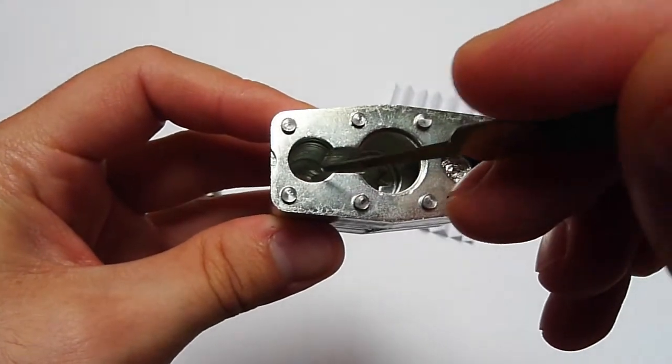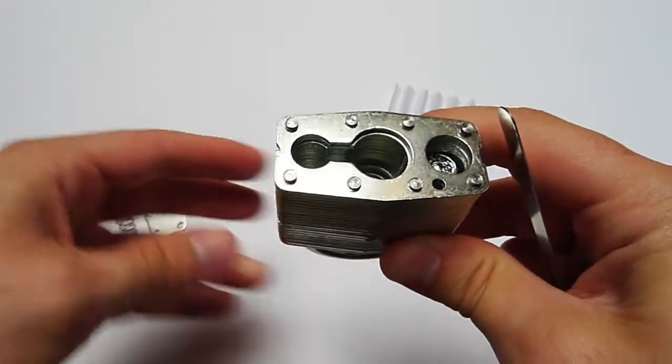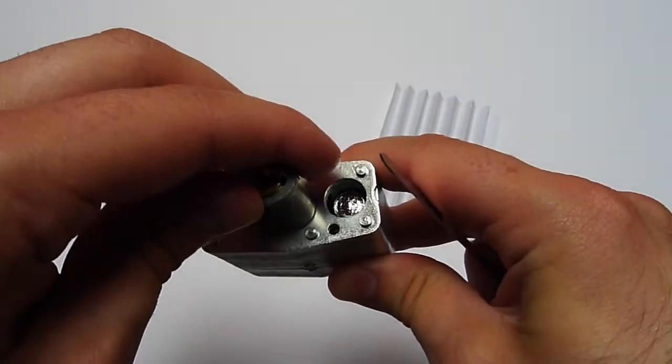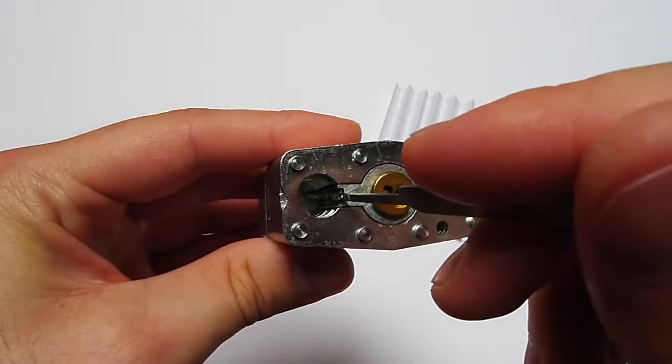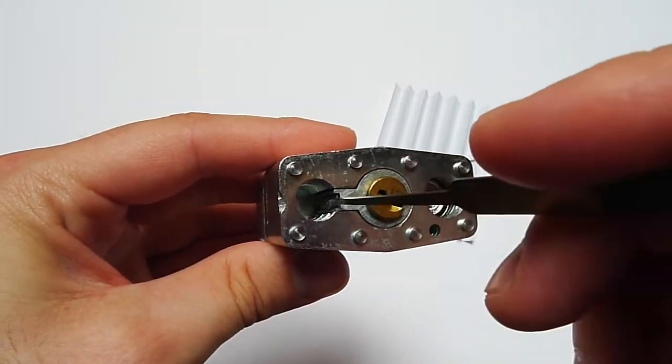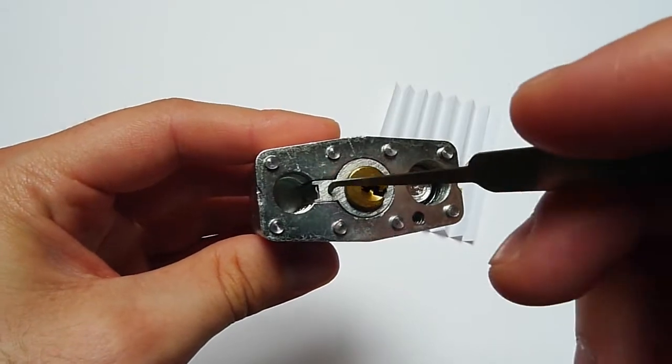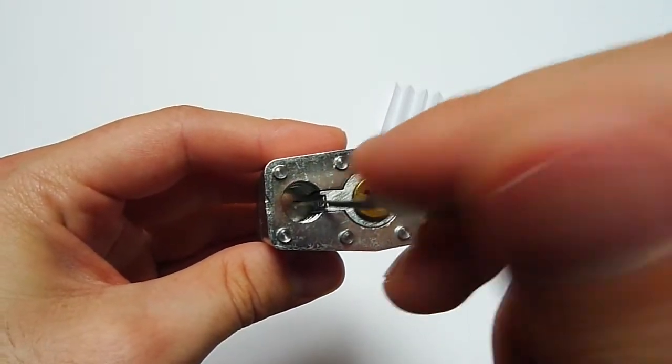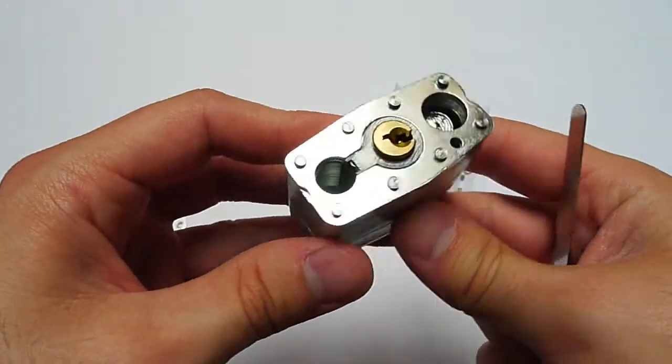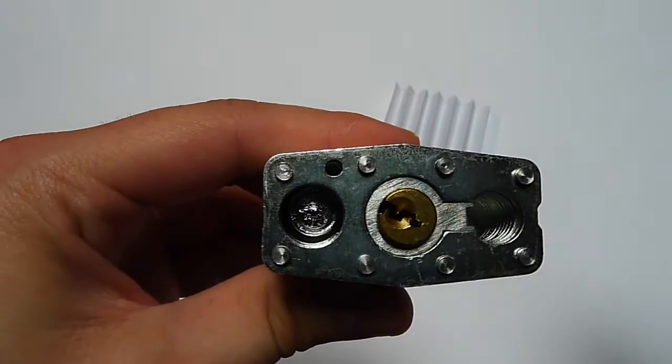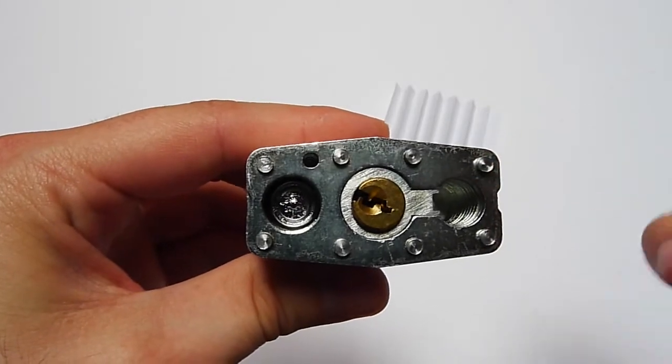Also we have this piece here. If we take our core and put the core in, you will notice that this part here, the spring is on this side, so here it's just empty space. Maybe also to save material and save weight.